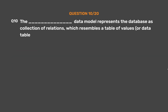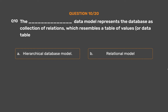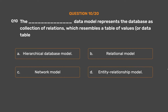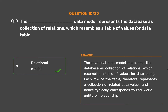Question number 10. The ___ data model represents the database as a collection of relations, which resembles a table of values or data table. Option A: Hierarchical database model. Option B: Relational model. Option C: Network model. Option D: Entity relationship model. The correct answer is Option B: Relational model. The relational data model represents the database as a collection of relations, which resembles a table of values or data table. Each row of the table represents a collection of related data values and hence typically corresponds to a real-world entity or relationship.